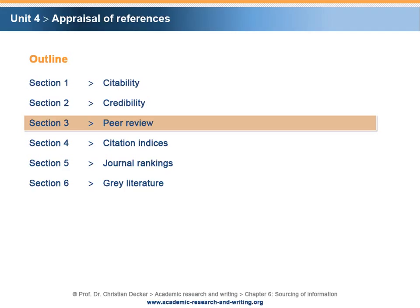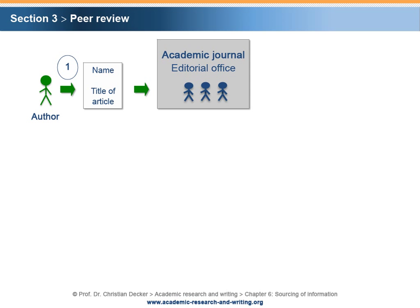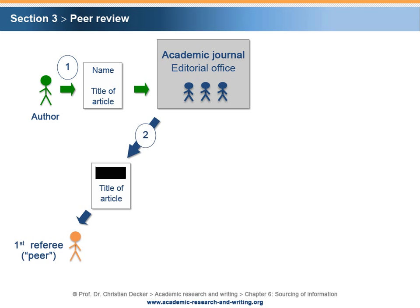Section 3: Peer Review. As pointed out, the existence of a peer review process signals quality of an academic journal. A typical peer review process could be organized as follows. An author submits an article to the editorial office of an academic journal for publication. The editorial office sends an anonymized version of the article to a first referee — a peer — who is an accredited scholar in the field of knowledge addressed in the article.